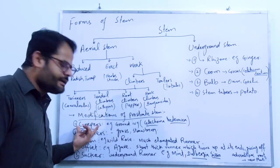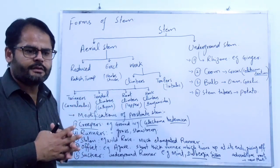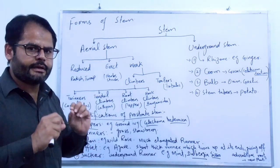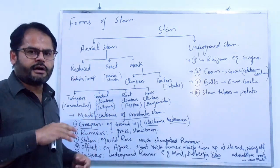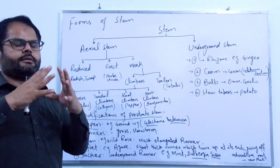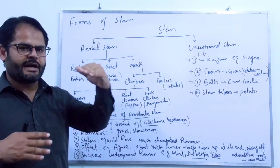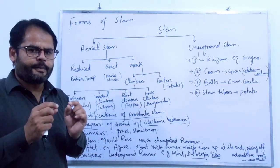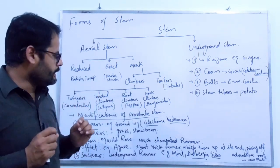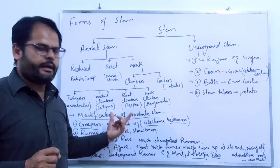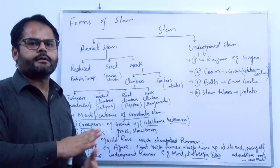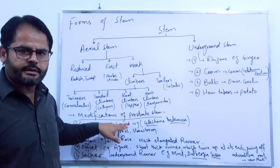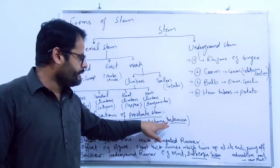The first type of prostrate stem is called creeper. Creepers are those plants which grow upon the surface of the ground having nodes and internodes. These plants grow on the soil surface, and from the nodes, branches and roots arise towards the soil. After some time, the area between two nodes dies away and the plants thus spread over the ground surface. The example of creeper is ground ivy, Glechoma hederacea.